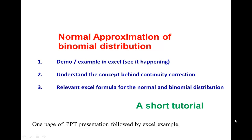In this video you are going to understand when normal distribution can be used in place of binomial distribution, or in other words when binomial distribution can be approximated by normal distribution. This is usually required because binomial distribution can sometimes be very cumbersome in calculation. The purpose of this presentation is to show you this happening in Excel — you will see when the shape of normal distribution is very similar to the shape of binomial distribution, understand the concept of continuity correction, and learn Excel formulas for normal and binomial distributions.